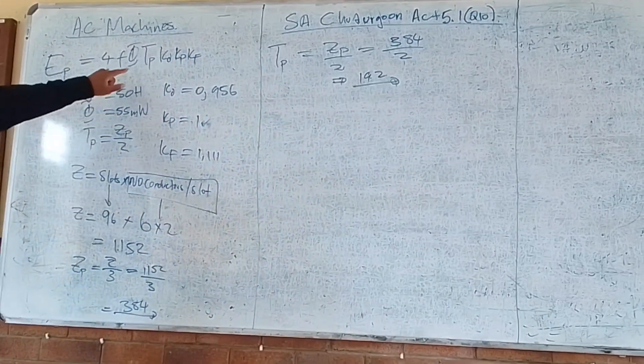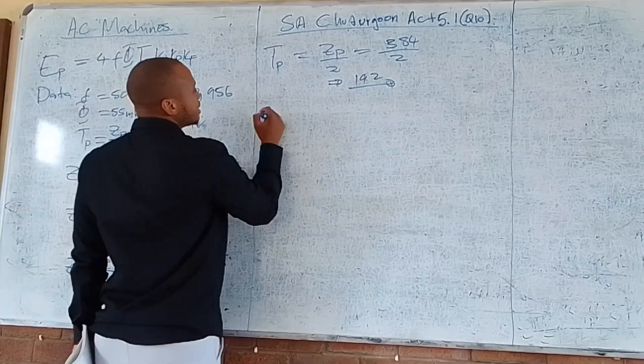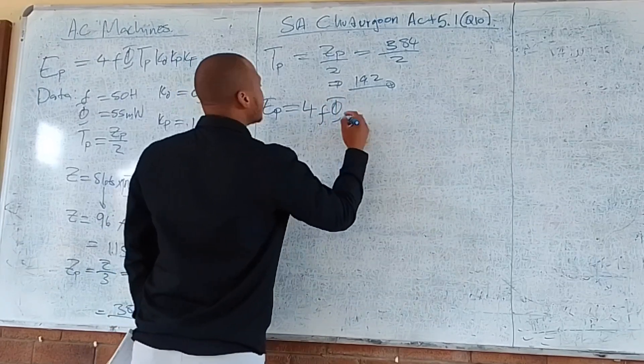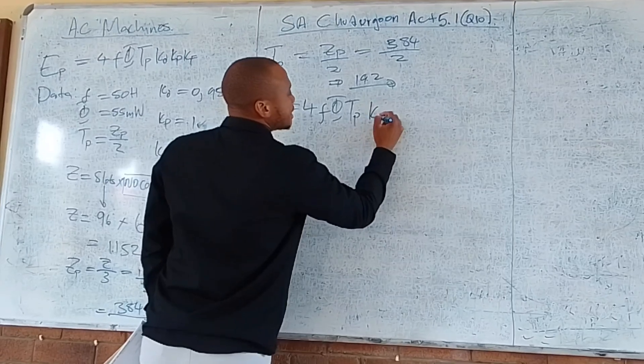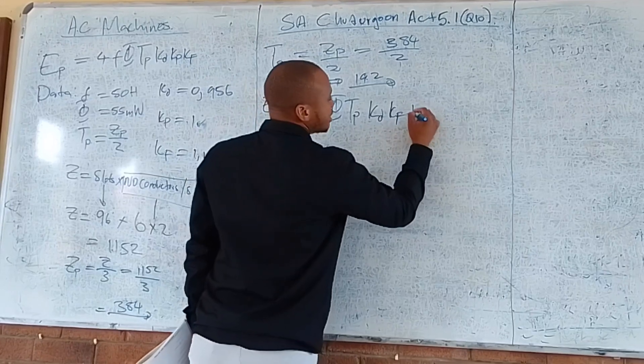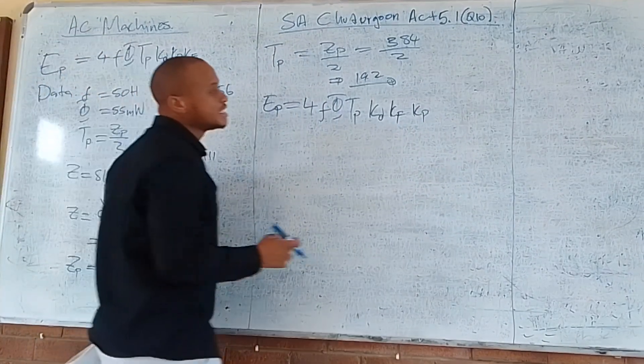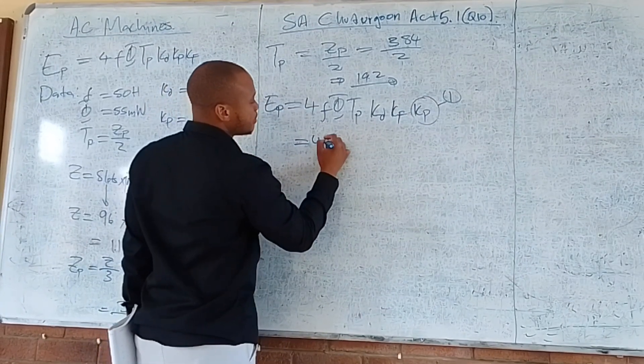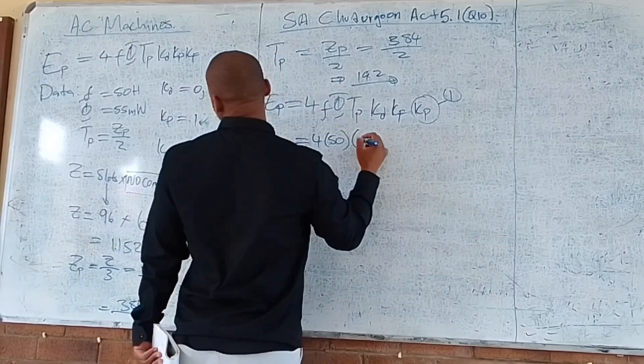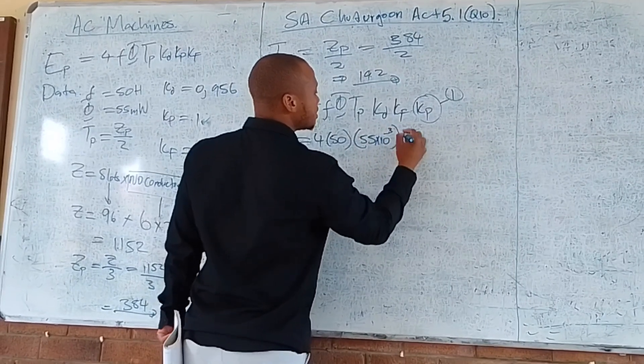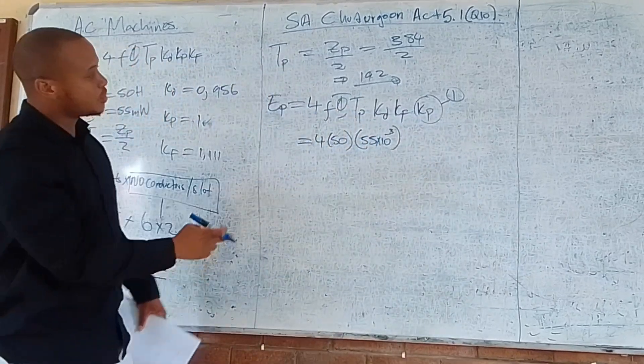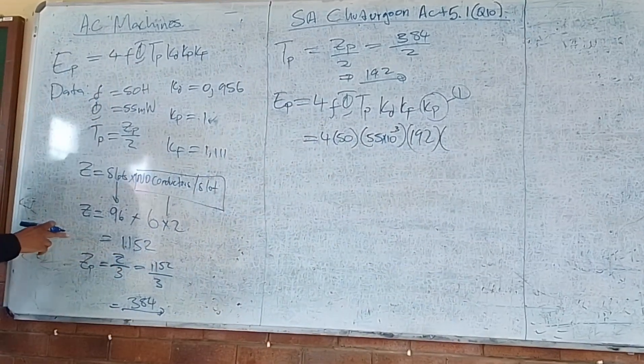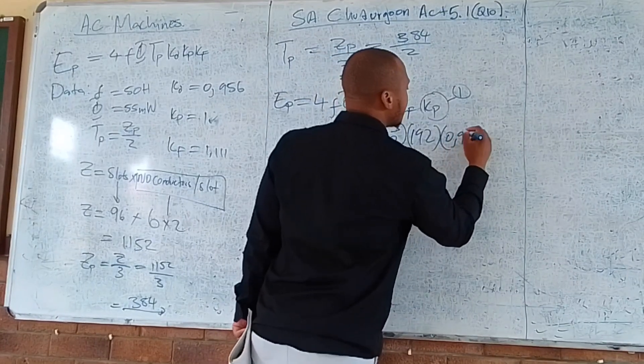We have everything needed to use this equation. The EMF per phase equals 4 multiplied by the frequency multiplied by the flux multiplied by the turns per phase, multiplied by Kd, Kf, and Kp. Our machine is fully pitched, meaning Kp equals 1. This equals 4 times 50 times 55 times 10 to the minus 3, times 192, times 0.956, times 1.11.